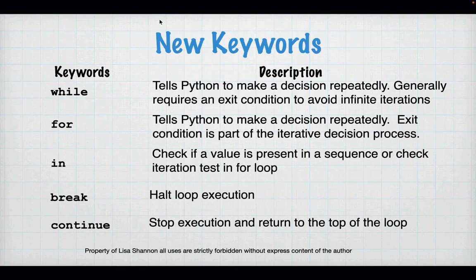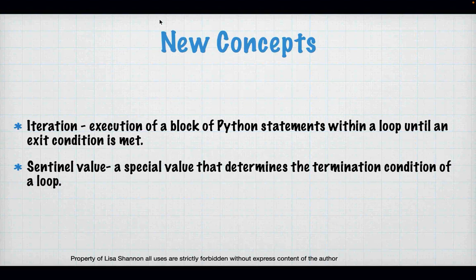Continue doesn't halt the execution of the loop completely. It stops what you're doing, goes back, and allows the loop to make a new decision. Those are our five new keywords, and we have a couple of new concepts: an iteration and a sentinel value. An iteration is one trip through the loop — the loop condition evaluates to true, you execute some lines of code inside the code block, and then it goes back up to the top to reevaluate.